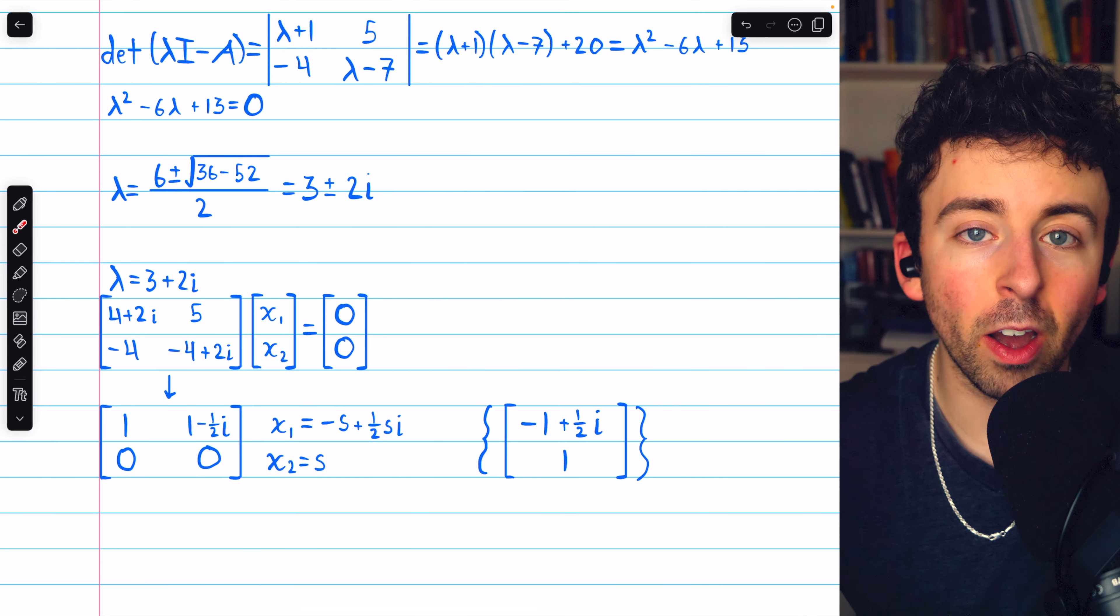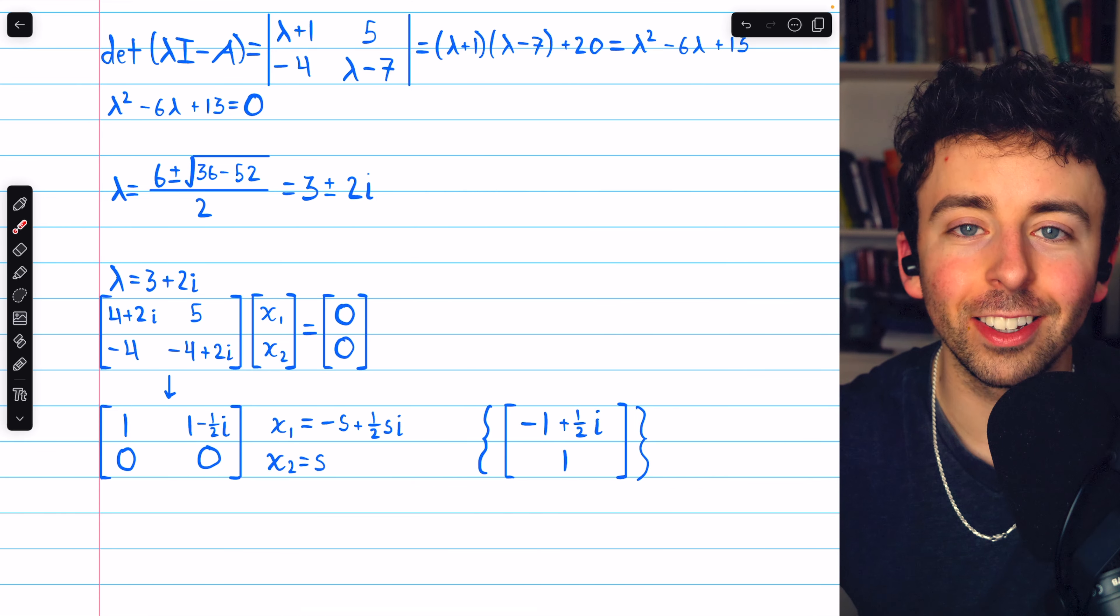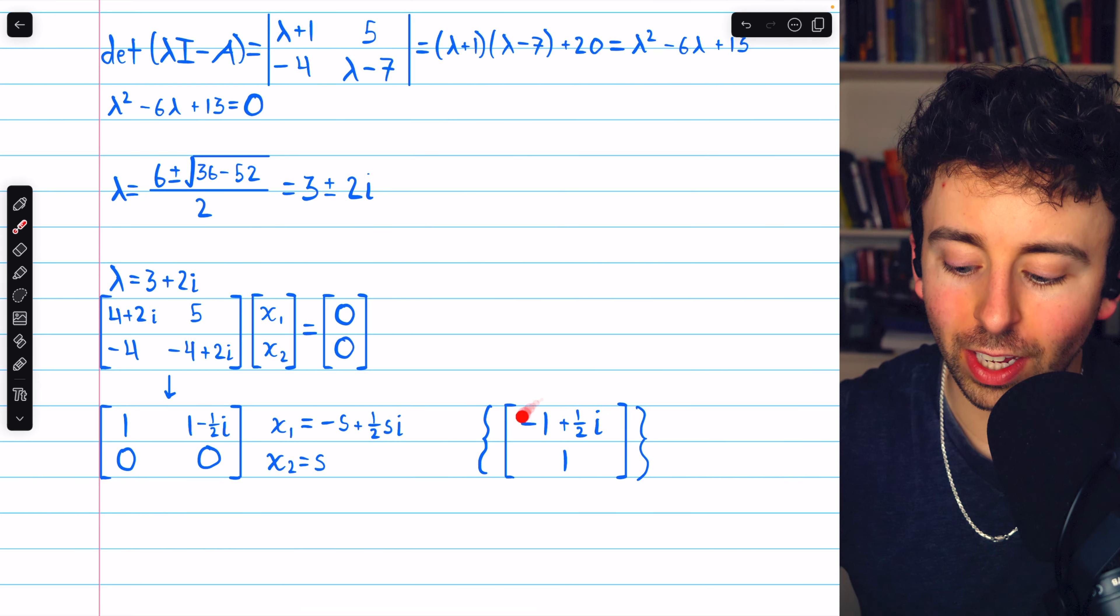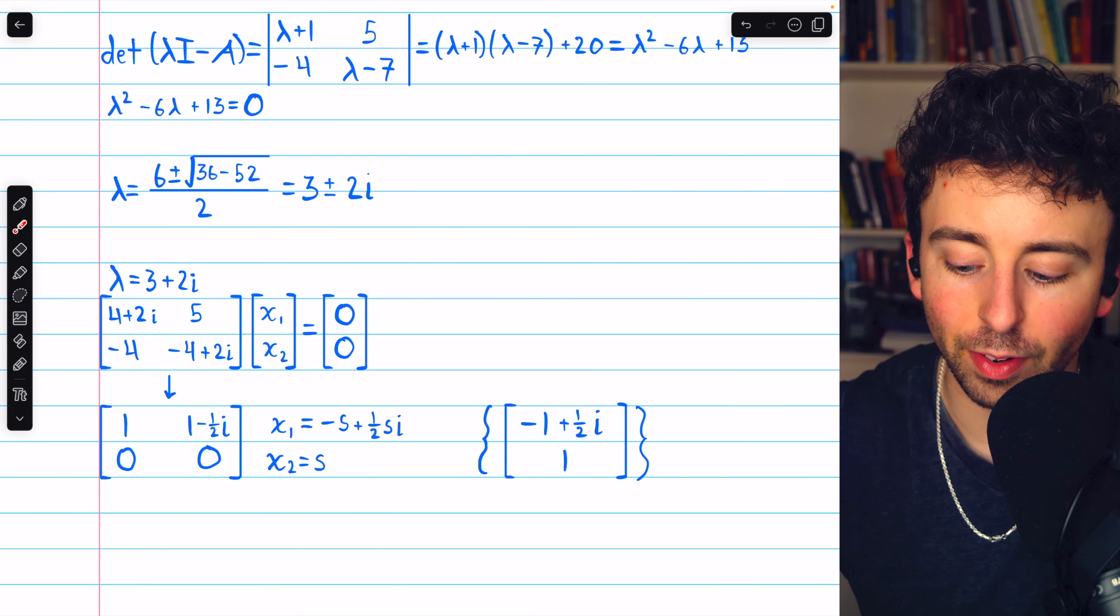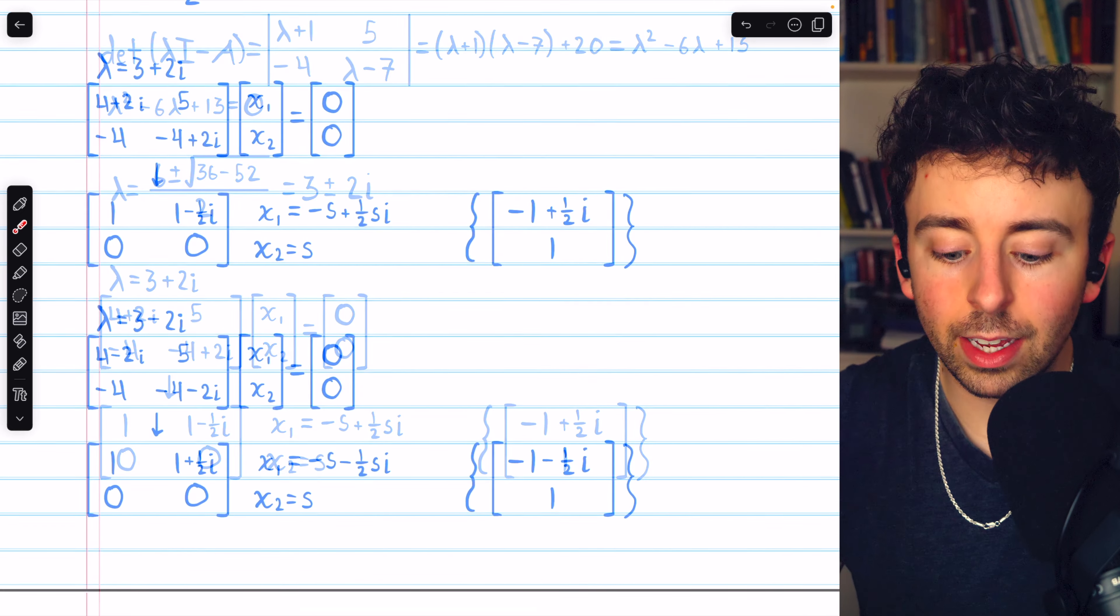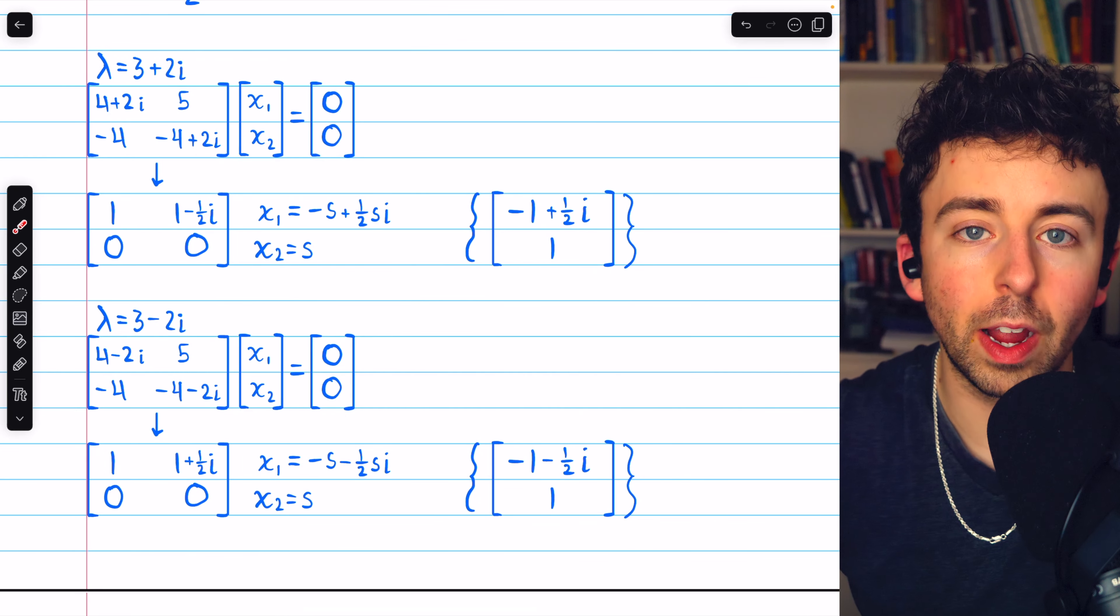And we know what the basis for the other eigenspace is going to look like. It's just going to be the conjugate of this vector here. So, it would be negative 1 minus a half i and positive 1. And here's the work written out to verify.